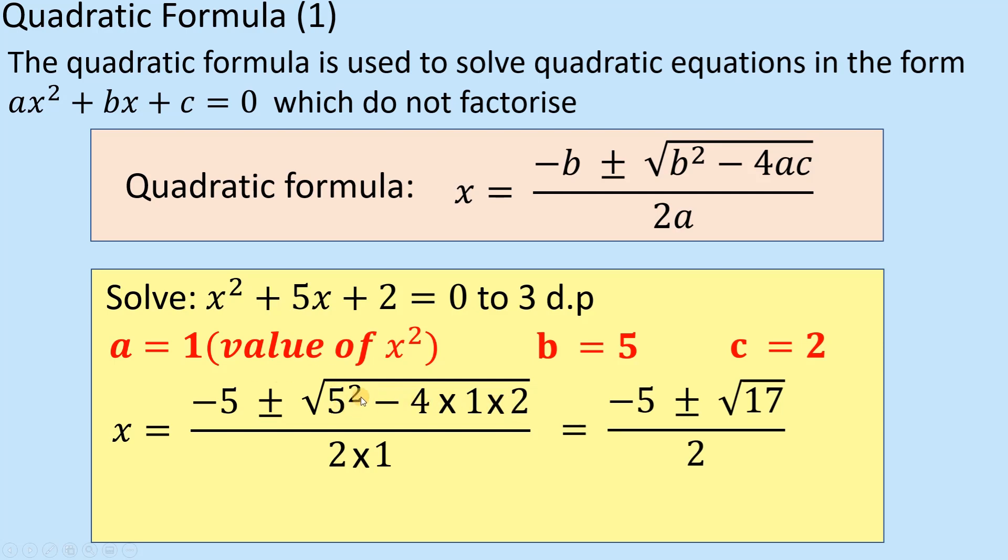Just simplifying this. You've got 25 minus 8, which gives you √17. You've got minus 5 still there and a 2 there. So you're going to do -5 + √17 divided by 2, and then -5 - √17 divided by 2. That's going to give you these two values from your calculator, rounding them to three decimal places as instructed. And that's pretty much it. You've got to learn this, practice it, get familiar with it, and very carefully put the numbers into your calculator.